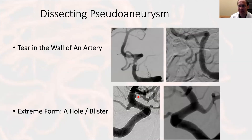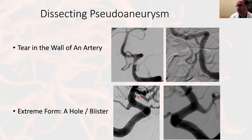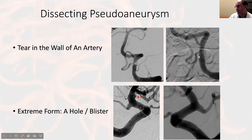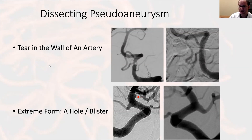In contrast, a dissecting pseudoaneurysm is a tear in the wall of an artery with no necessarily associated branch vessel. The tear can enlarge and become a pseudoaneurysm, and you can also have some narrowing. In the figure, there's a fusiform or dissecting aneurysm of the vertebral artery with a stenosis. I've treated it using a flow diverting stent that remodeled the artery, treated the stenosis, and led to occlusion of the pseudoaneurysm.